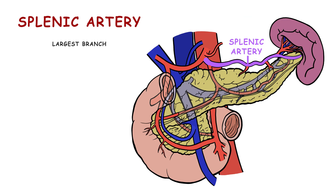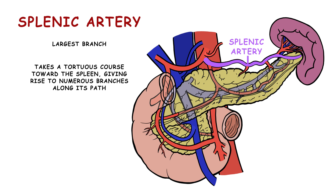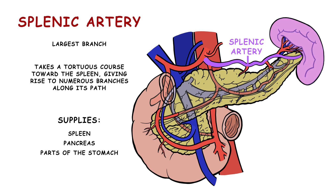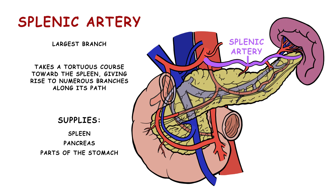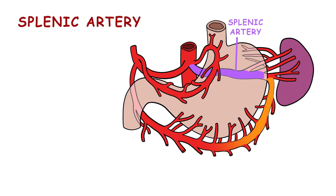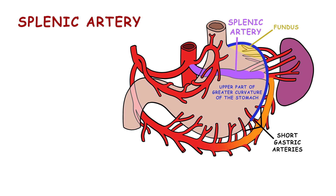The splenic artery, the largest branch of the celiac trunk, takes a tortuous course towards the spleen, giving rise to numerous branches along its path. It supplies blood to the spleen, pancreas, and parts of the stomach. Along its path, the splenic artery gives off multiple branches, including short gastric arteries that supply the fundus and upper part of the greater curvature of the stomach.